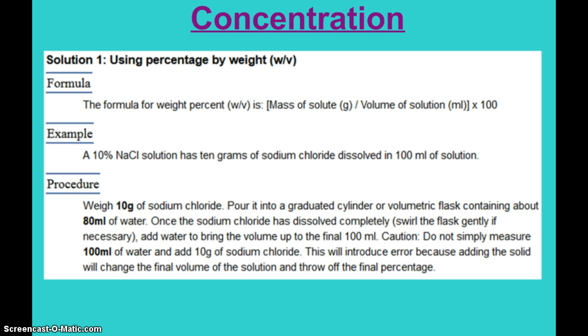Here you see the sample about using percentage by weight, mass of solute divided by volume of solution. So if you have a 10% sodium chloride solution, that means there's 10 grams of sodium chloride dissolved in 100 milliliters of solution. Down in the little descriptive paragraph is something important we'll talk about later. That does not mean you measure 100 milliliters of water and add 10 grams of sodium chloride to it. That will bring about some error because adding the solid will actually change the final volume of the solution.